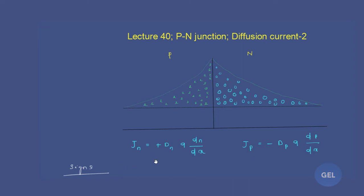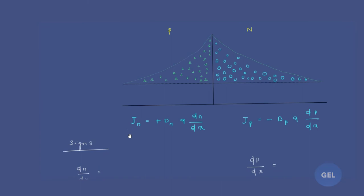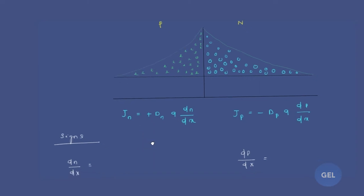For the P-type we know the expression for JP will be plus DP (diffusion constant) into Q into dp/dx, and Jn would be similar. Now let's understand the sign convention — this is important, please look here carefully. Let's do a sign convention analysis for this side.